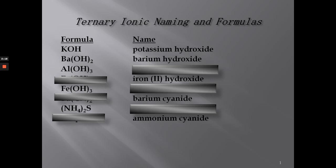Aluminum and three hydroxides gives us aluminum hydroxide. Let's look at the next one.